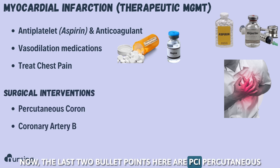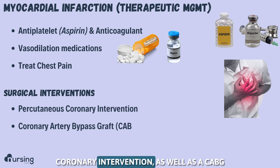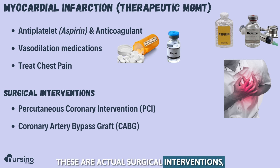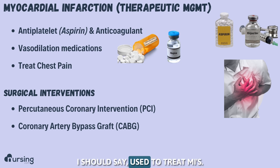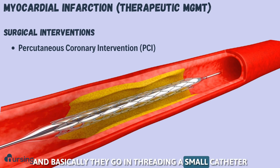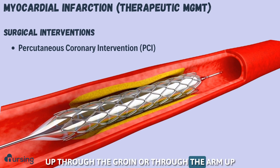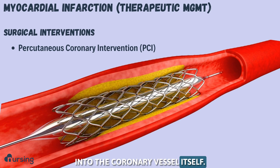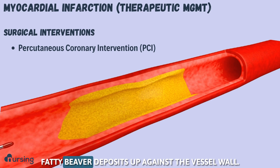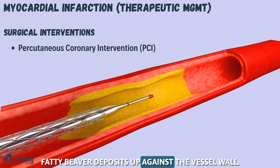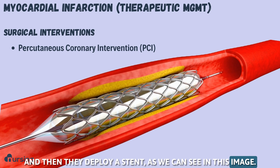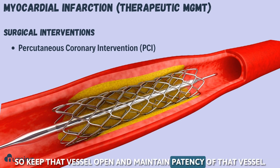The last two treatment options are PCI — percutaneous coronary intervention — as well as CABG, coronary artery bypass graft. These are invasive interventions used to treat MIs. We see PCI all the time. Basically, they thread a small catheter up through the groin or through the arm into the coronary vessel itself. They inflate a balloon within that vessel, which squishes the fatty plaque up against the vessel wall, and then they deploy a stent — as we can see in this image — to keep that vessel open and maintain patency.